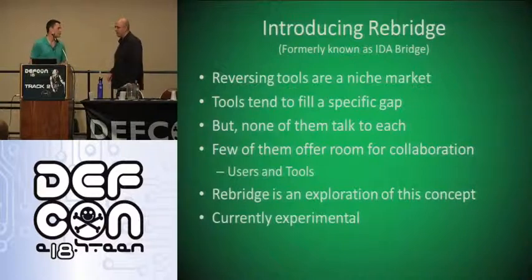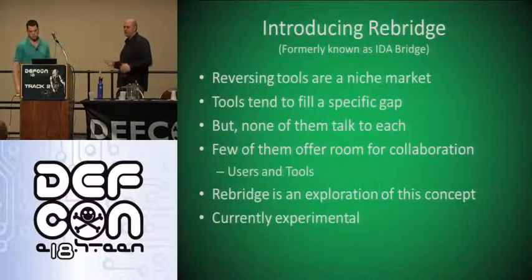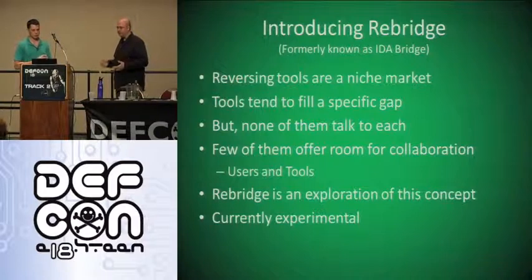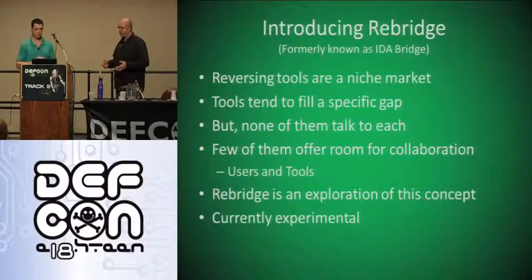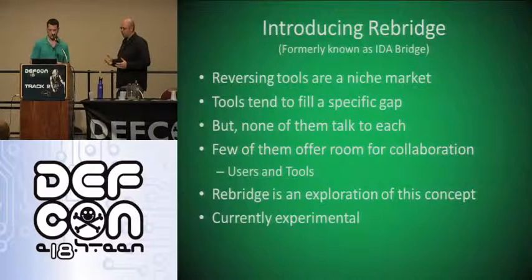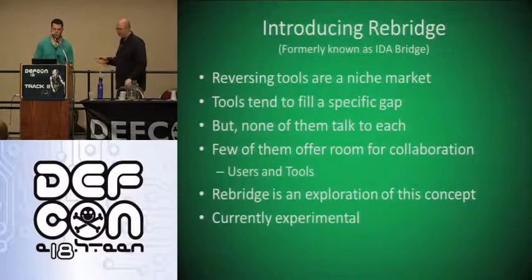Now we'll talk about RE Bridge, originally called IDA Bridge. The basic idea: we all have our debuggers — everybody uses IDA, but you might prefer Immunity Debugger or WinDbg, and you can't get them to talk. IDA has its own debuggers but they're pretty terrible to use. You have your own debugger with all your scripts and you just want to convert things back over to IDA sometimes. So basically you just want the tools to be able to talk to each other. Originally it was IDA Bridge, but then we thought all these tools might want to talk to each other.